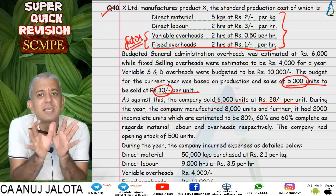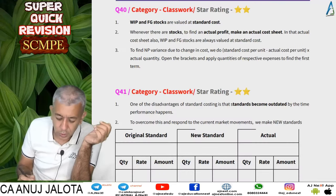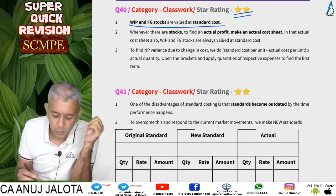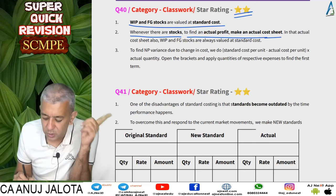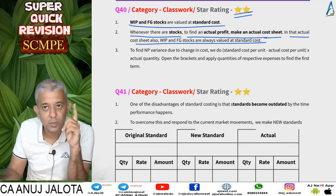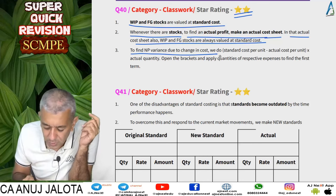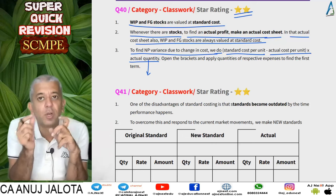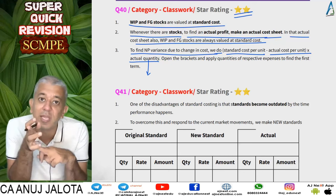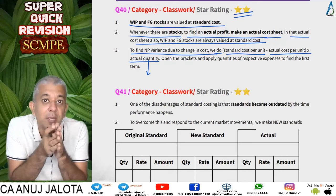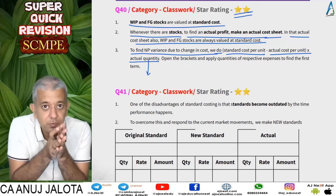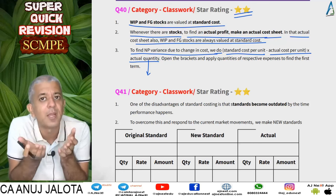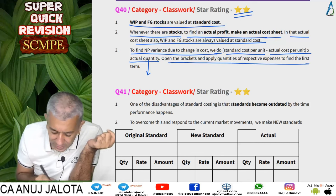Finding variances was a simple part. Key points: WIP and finished goods stocks are always valued at standard cost. Question 40 is a two-star question, not very important from an exam standpoint. To find net profit variance due to change in cost: standard cost per unit minus actual cost per unit, multiplied by actual quantity. Actual quantity has different meanings — for material, labor, and factory overheads it means equivalent output; for variable S&D it means quantity sold; fixed admin and S&D are lump-sum costs, so open the brackets and find each variance.